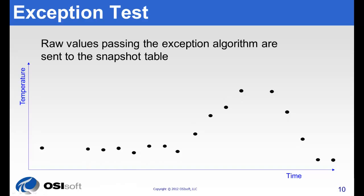Here are the raw values that passed the exception algorithm and have arrived at the snapshot table of the PI server. In this scenario, not too many passed exception, but in your scenarios, quite a few might. It all depends on the process and the exception settings.